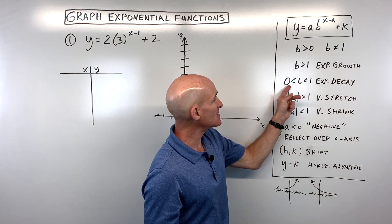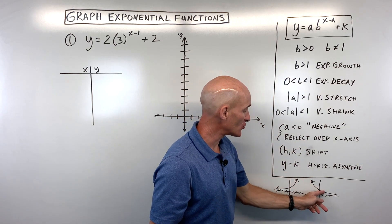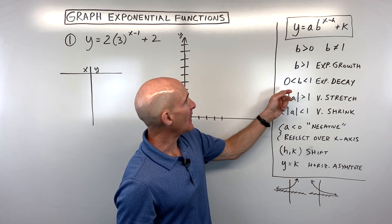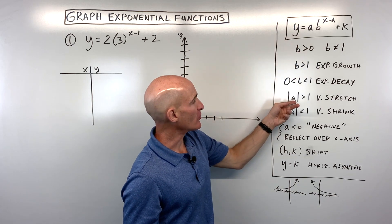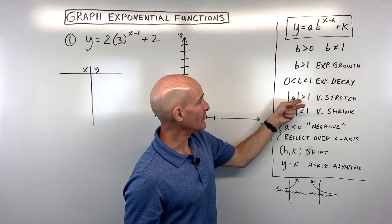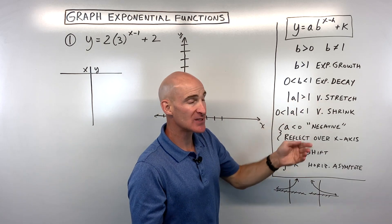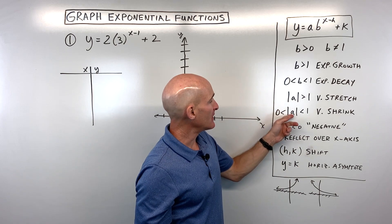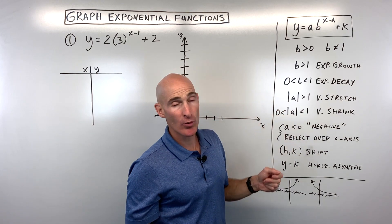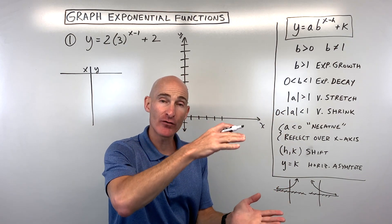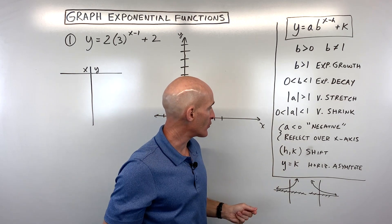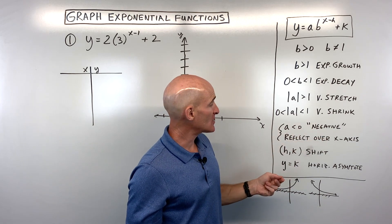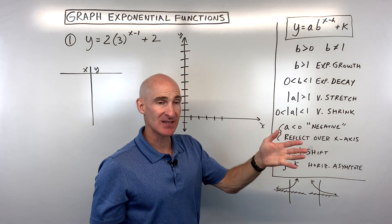If the base is between zero and one, it's going to be an exponential decay function, meaning it's going down to the right — it's decaying. Now the a value, this coefficient: when the absolute value of a is greater than one, we say it's a vertical stretch, like you're pulling it in the y direction. But if the absolute value of a is between zero and one, say like a half, then we say it's a vertical shrink — you're squeezing it vertically. And if the a value is less than zero, meaning it's negative, it's going to reflect it over the x-axis.